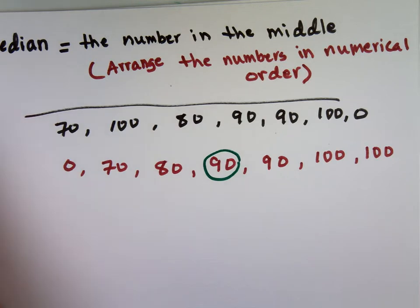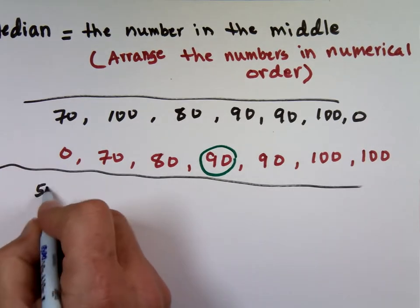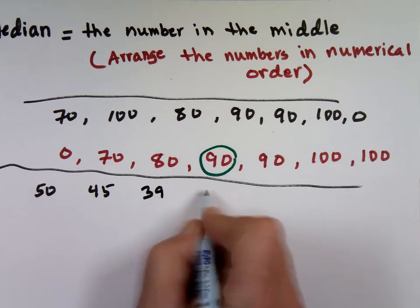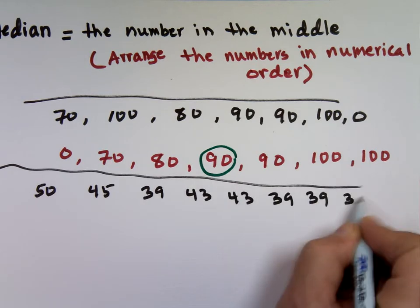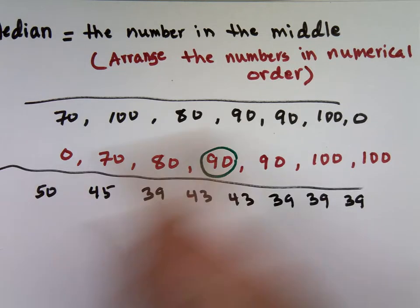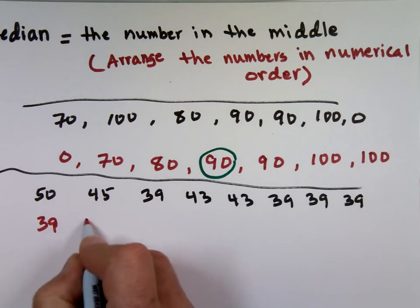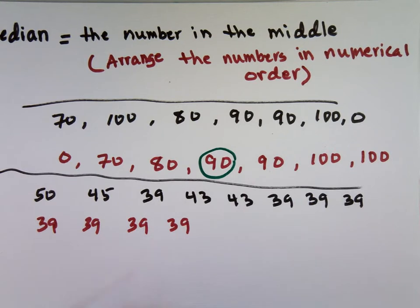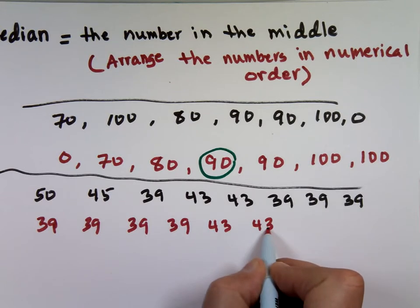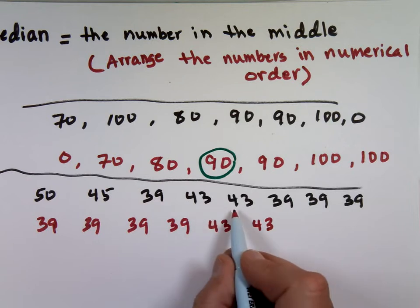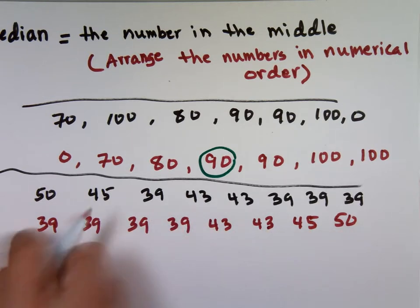I know what you're thinking. What about that temperature we had earlier? That example. You had a 50, 45, 39, 43, 43, 39, 39, 39. These are even numbers. They're not odd. You have an odd number, you got a number in the middle. First, let's arrange them. What comes after that, the 43s? 43, 43, what else now? 45 and 50.